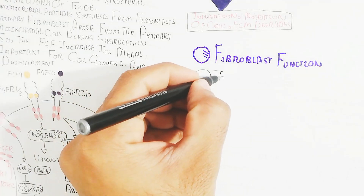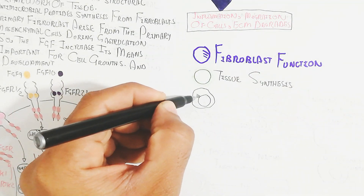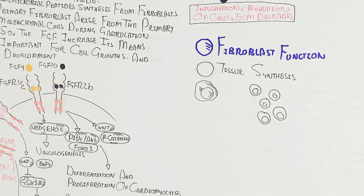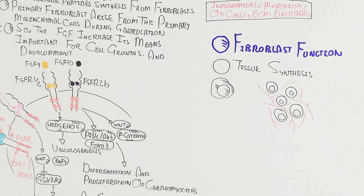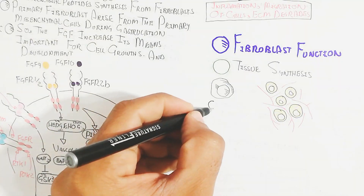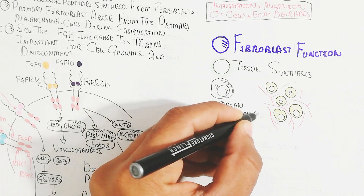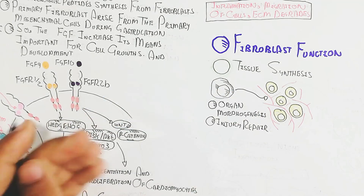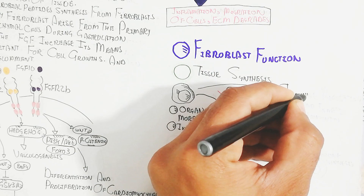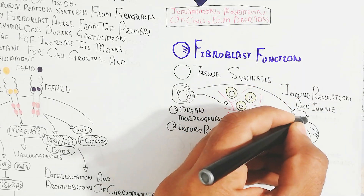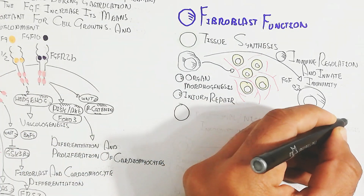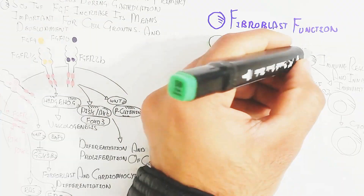The fibroblast functions include tissue synthesis — organ morphogenesis occurs via collagen formation to produce organs during early fetal development. FGF also enables immune regulation and innate immunity progression through cytokine synthesis. These represent the main functions of fibroblasts and FGF production.